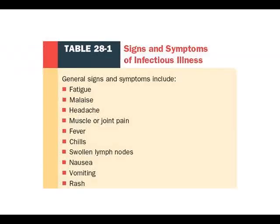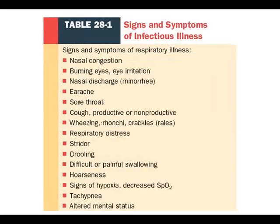Table 28-1 from page 678 in your textbook gives brief reminders of signs and symptoms of various types of illness. General signs include fatigue, malaise, headaches, joint pain, vomiting, rash, and swollen lymph nodes. Respiratory illness signs include nasal congestion, irritated eyes, rhinorrhea, earaches, sore throat, productive or non-productive cough, wheezing, ronchi, rails, respiratory distress, stridor, drooling — put that one to memory — difficulty or pain in swallowing, hoarseness, signs of hypoxia or decreased SpO2, tachypnea, and altered mental status.